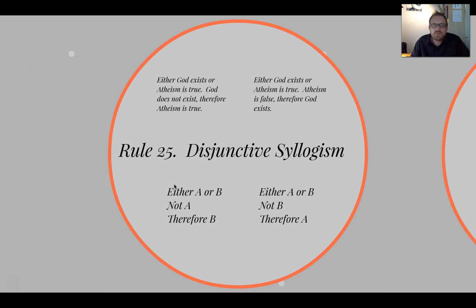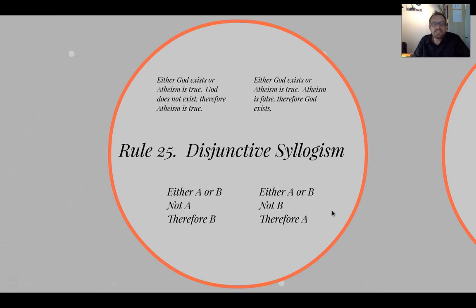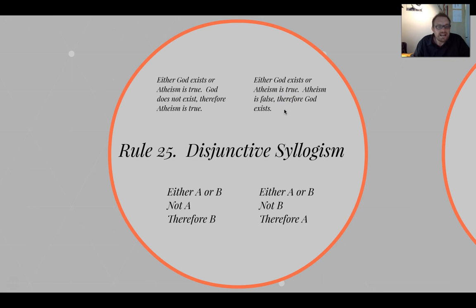The disjunctive syllogism typically has one form, but there are actually two forms possible. Someone might say: either A or B; not A; therefore B. Either I'm going to get a salad or a soup; I'm not going to get a salad; therefore I'm getting a soup. Alternatively, you can deny the second part: either A or B; not B; therefore A. Here's the example: Either God exists or atheism is true; God does not exist; therefore atheism is true — that's a disjunctive syllogism. Conversely: Either God exists or atheism is true; atheism is false; therefore God exists. Both of which are valid.